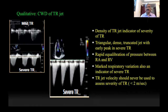The dense triangular truncated CW Doppler signal is mainly because of rapid equilibration of pressure between the RA and the RV. Marked respiratory variation is also considered an indicator of severe tricuspid regurgitation. Never rely solely on jet velocity because in torrential TR — a term we will discuss shortly — the jet velocity may actually come down to less than 2 meters per second.